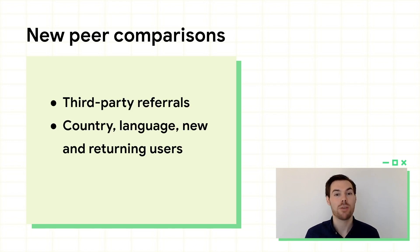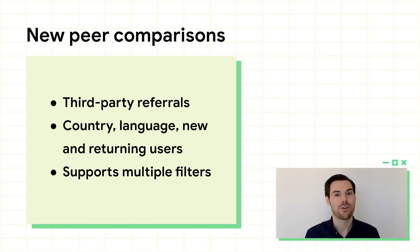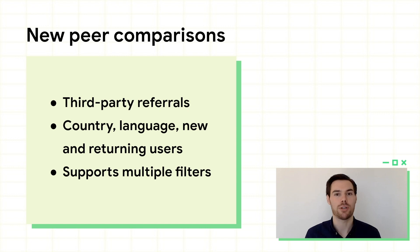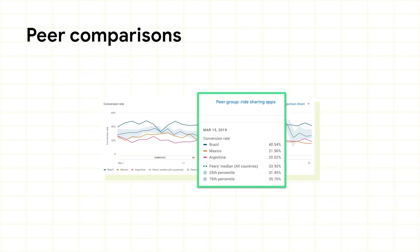Second, peer comparisons will be available for more dimensions, including countries, languages, new users, returning users, or both. Third, peer comparisons will be compatible with filters. This means you could compare your search, explore, and referral performance when filtering to only new users in one particular country. We are also adding peer comparisons to the new charts so you can monitor how they change over time. This can help you understand whether shifts have affected the whole ecosystem or are specific to your app and worth investigating.